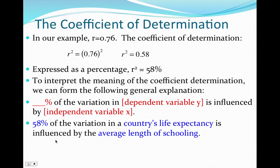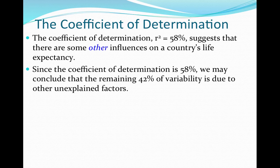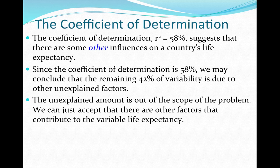Filling out the blanks: 58% of the variation in a country's life expectancy is influenced by the average length of schooling. The coefficient of determination is expressed as a percent, with y being life expectancy and x being average length of schooling. Since the coefficient of determination is 58%, the remaining 42% — found by taking 100 minus 58 — of variability is due to other unexplained factors outside the scope of this problem.